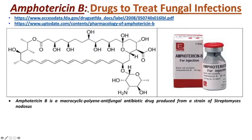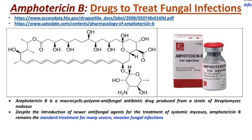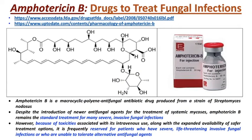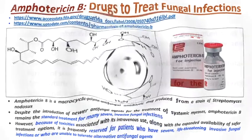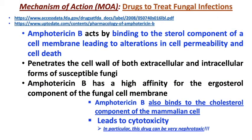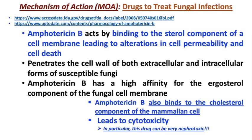Amphotericin B is a macrocyclic polyene antifungal antibiotic drug produced from a strain of Streptomyces nodosus, used for many severe invasive fungal infections, but it has toxicities associated with it. The liposomal amphotericin B formulation acts by binding to the sterol component of the fungal cell membrane, leading to alterations in cell permeability and cell death. It also binds cholesterol, a key component of mammalian cells, which leads to its cytotoxicity — in particular, the drug can be very nephrotoxic.